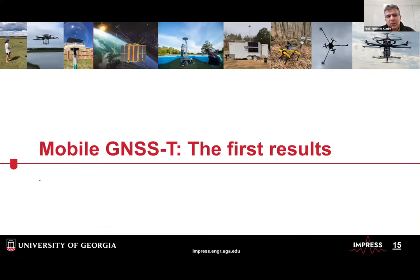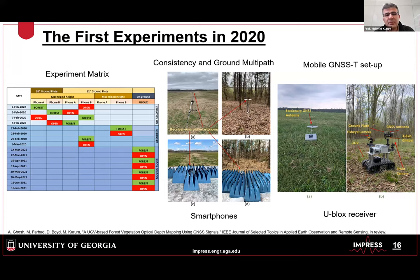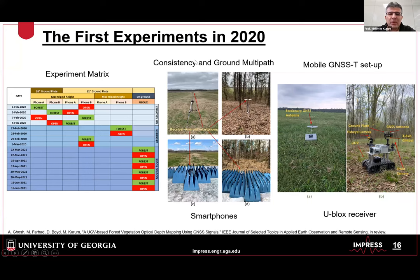Now I'll go into specific examples. The first is the mobile GNSS-T deployment from 2020, right before COVID. In this experiment we used smartphones and off-the-shelf u-blox receivers. We had two things we wanted to understand: the consistency of measurements between two instruments, and the impact of ground multipath, since we're rolling a rover through the forest and want to sample the forest, not the ground. We conducted special experiments, placing absorbers on the forest floor and using different sizes of ground plates to understand multipath impact.